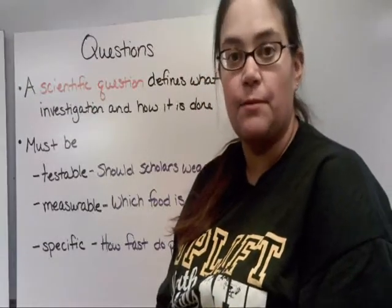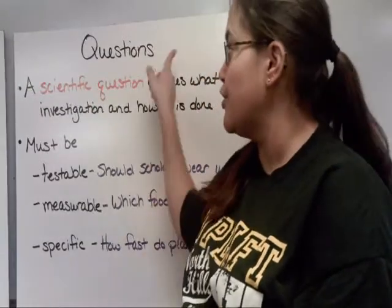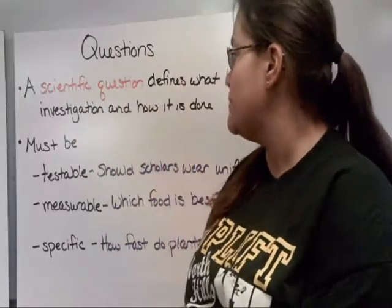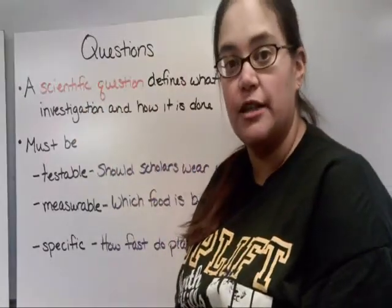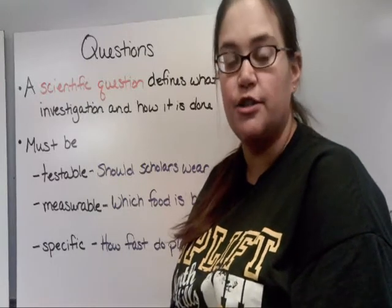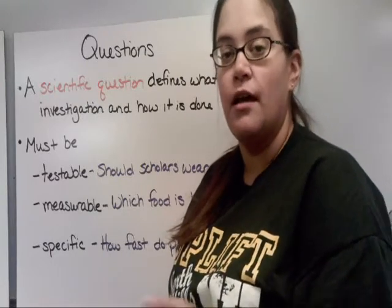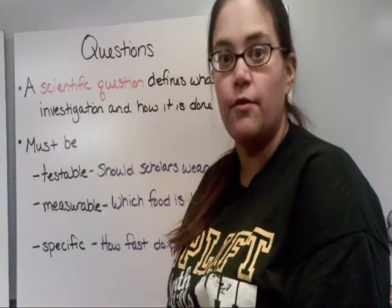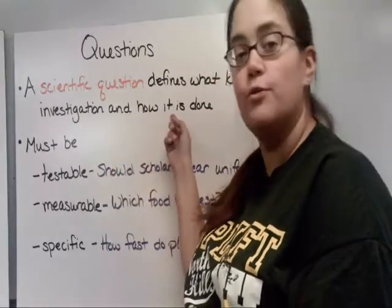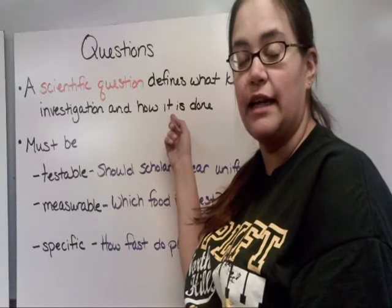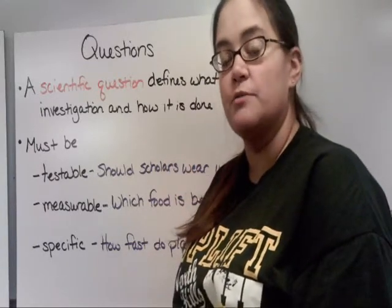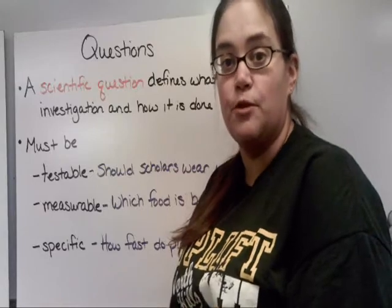The first part of the scientific method is your questions. A scientific question defines what type of investigation you will do and how you will do it. Depending on your question, you might do a descriptive, comparative, or experimental investigation. It also tells you how to set up your experiment — how many trials you'll do and what types of things you'll be measuring.